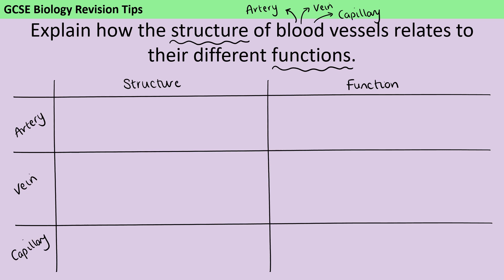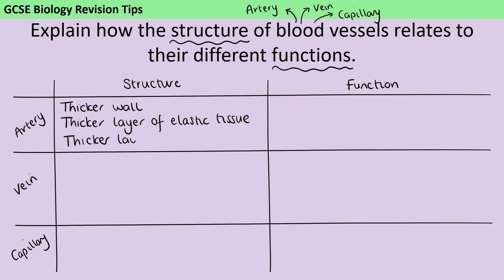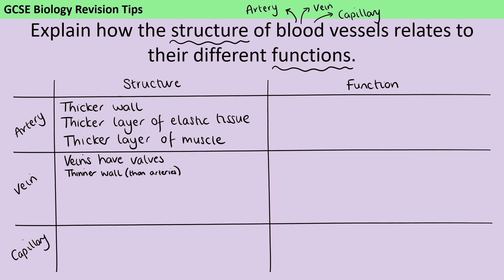Arteries have much thicker walls than veins or capillaries — specifically, thicker layers of elastic tissue and thicker layers of smooth muscle. The number one thing to know about veins is that veins with a V have valves in them. You might also include the converse statements: veins have thinner walls compared to arteries, with thinner layers of elastic tissue and thinner layers of muscular tissue.